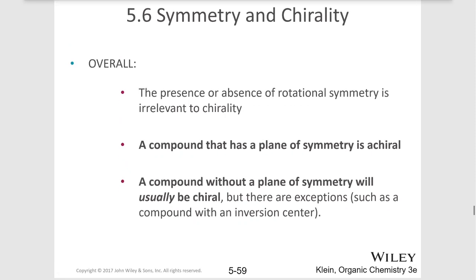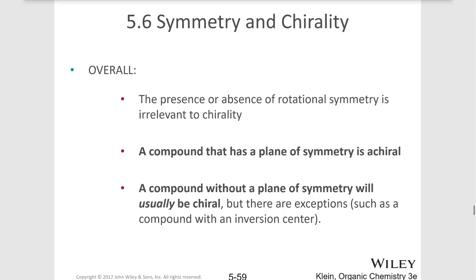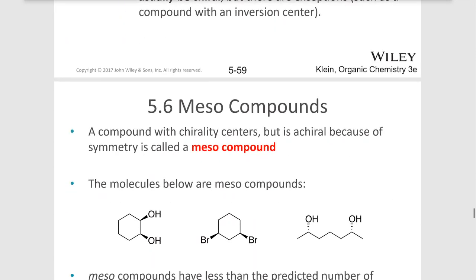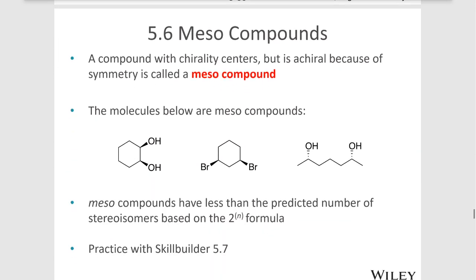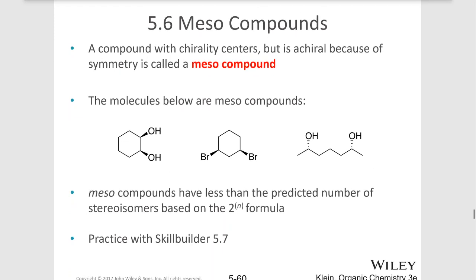A compound that has a plane of symmetry is achiral. A compound without a plane of symmetry will usually be chiral, but there are exceptions like a center of inversion. A compound that has chirality centers but is achiral because of symmetry is called a meso compound.